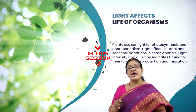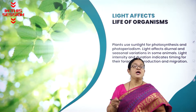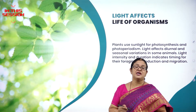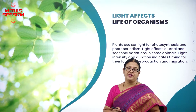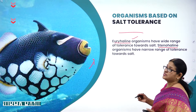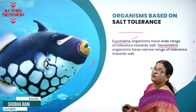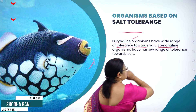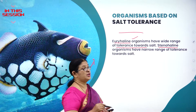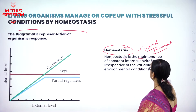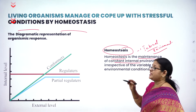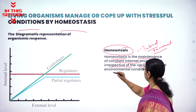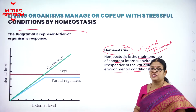What is ecology? It's an interaction amongst organisms and between organisms and their physical environment. Euryhaline organisms are those which can adjust to a wide range of salinity, having wide tolerance towards salt. Homeostasis is the maintenance of a constant internal environment irrespective of variable external environmental conditions.